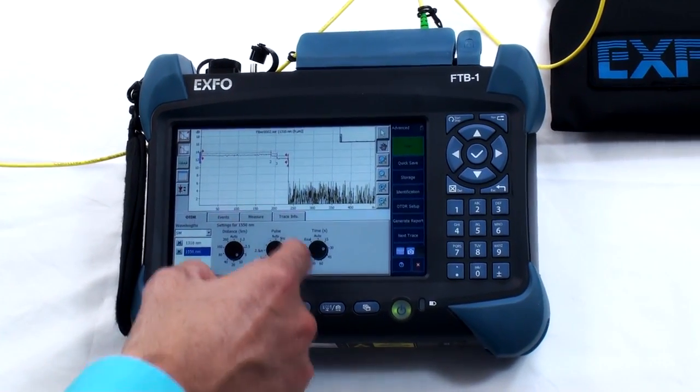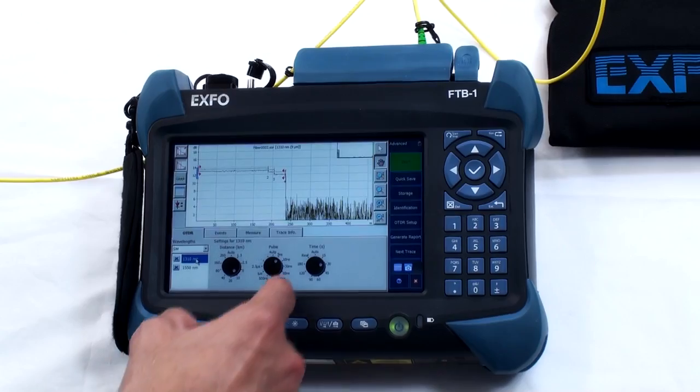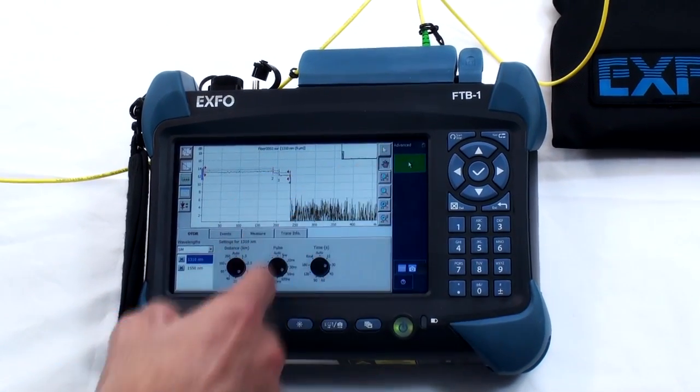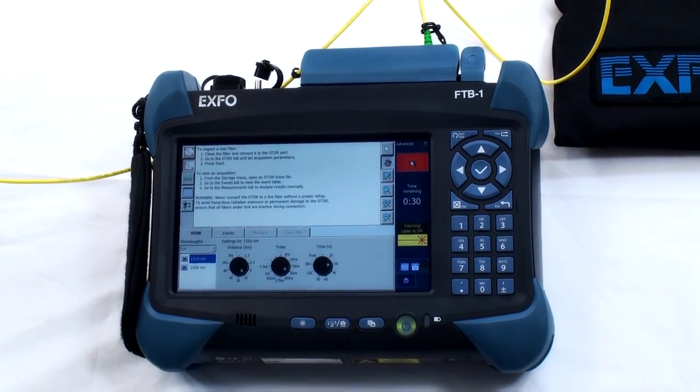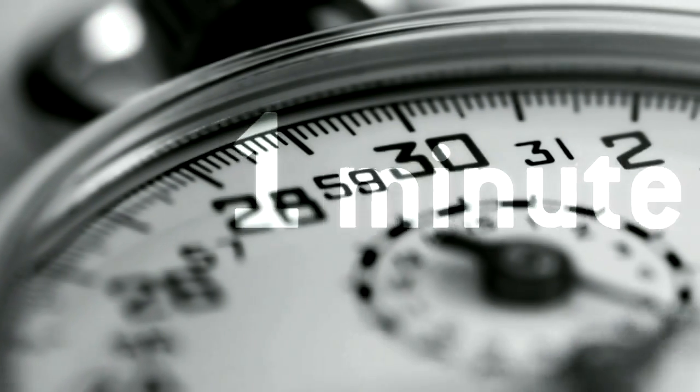So now I change the OTDR to 50 ns and I launch a new acquisition. Okay, so I got the second trace, now I'm able to measure the loss of the first splitter.